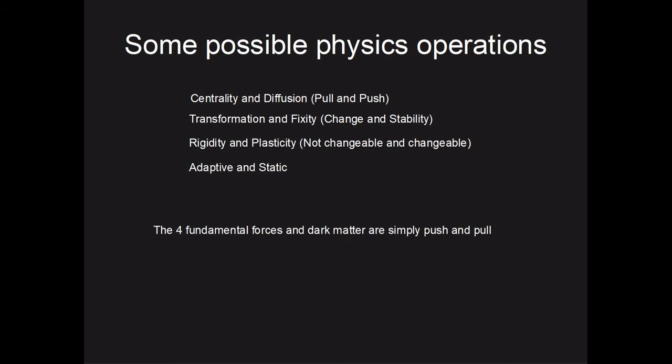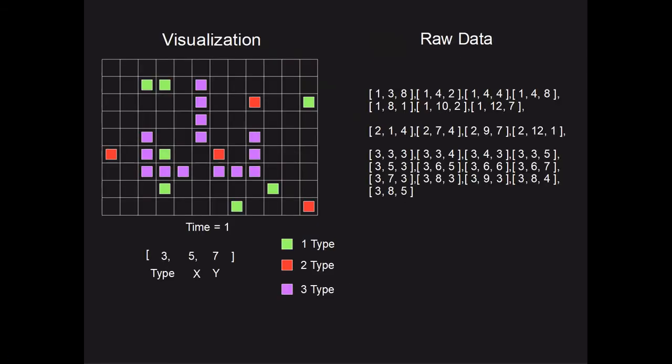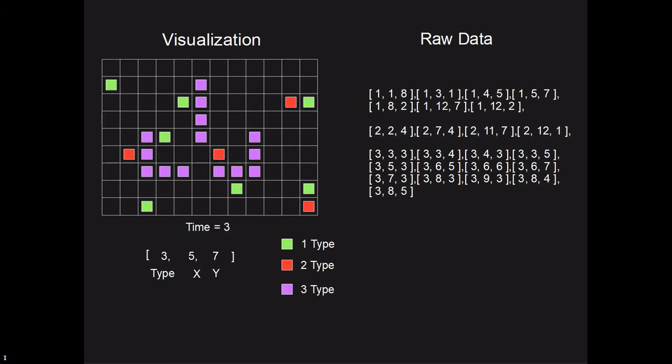Now let's take a look at a theoretical two-dimensional universe with the following rules applied to each type of particle. Type-one particles move towards the closest type-two particles. Type-one particles push away other type-one particles. Type-two particles move towards the closest type-one particle. Type-three particles just won't do anything. The final rule is that particles can't move where another particle is — they can't stack on top of each other. Type-one and type-two particles are close to how protons and electrons work in our universe, except in our universe they use a net force instead of just moving towards the closest target particle.